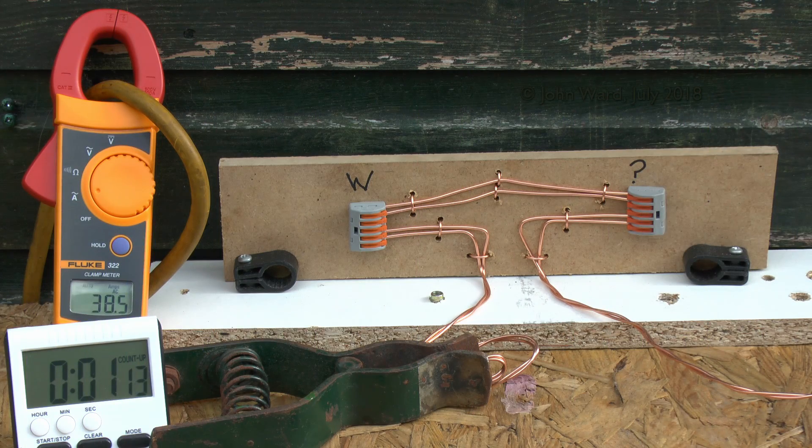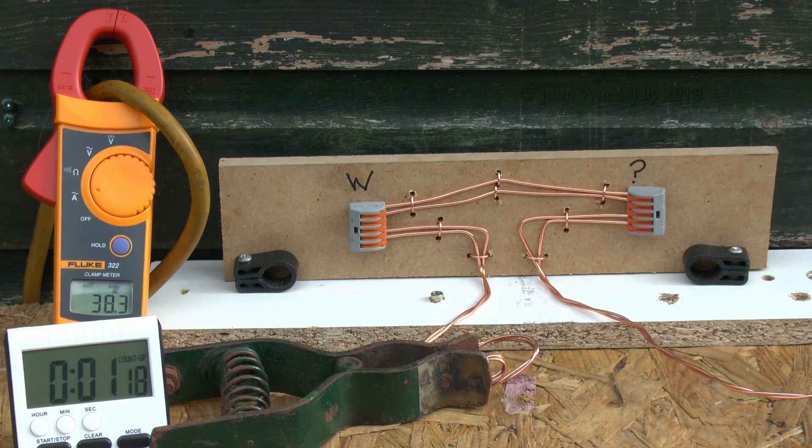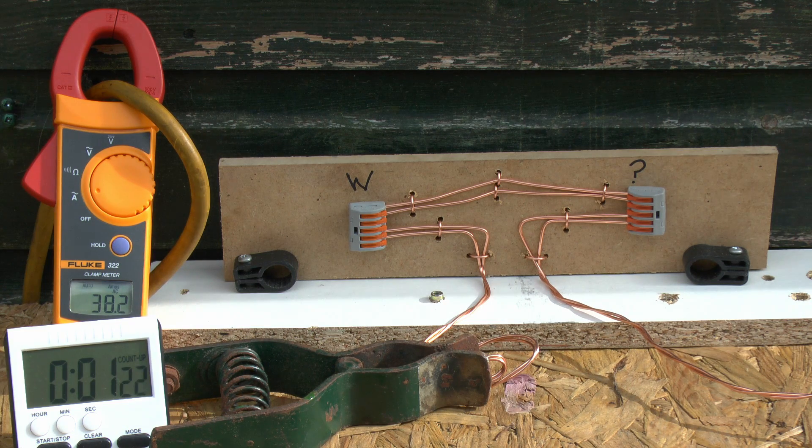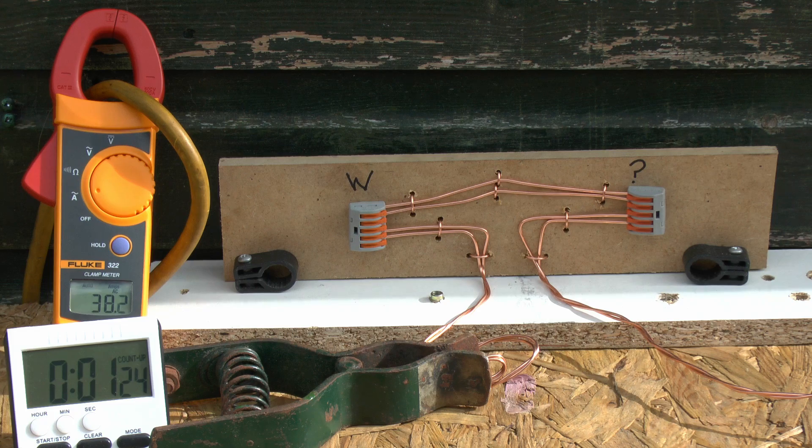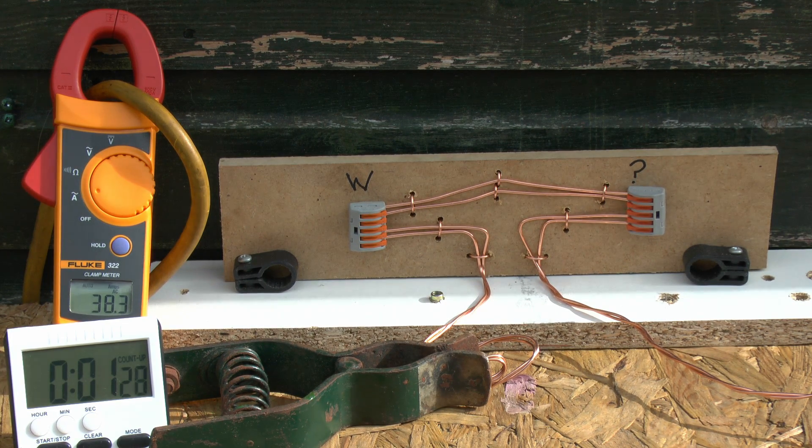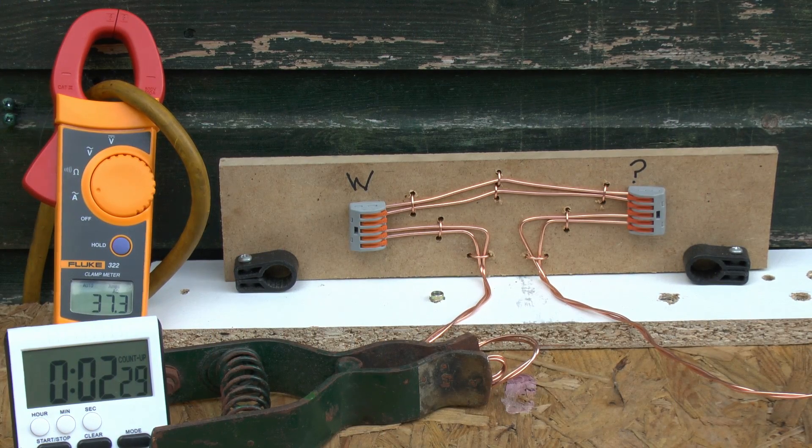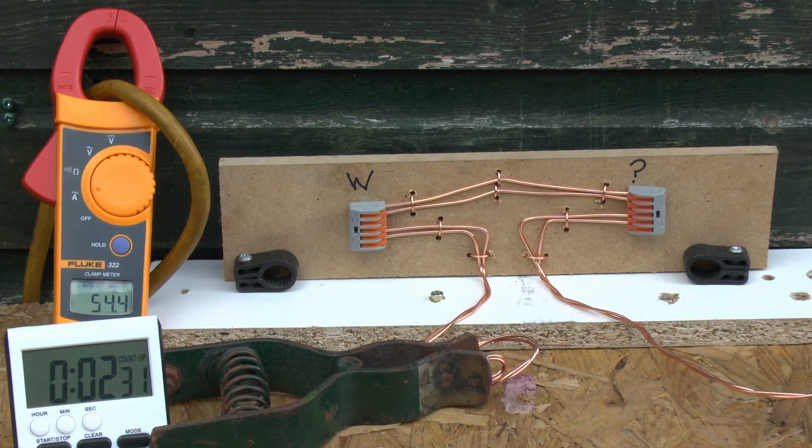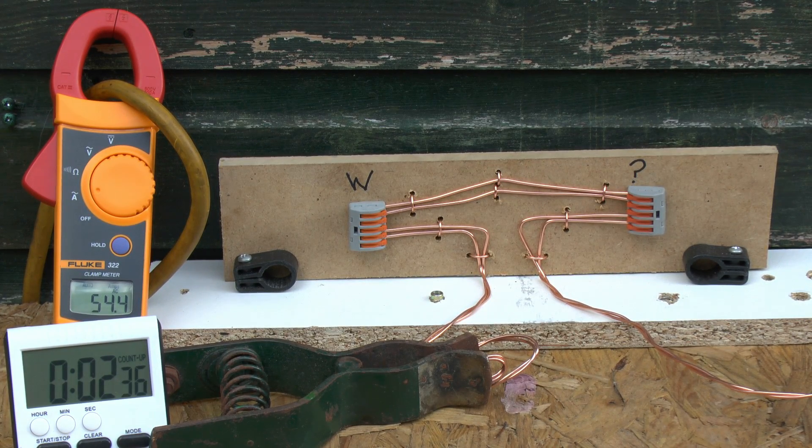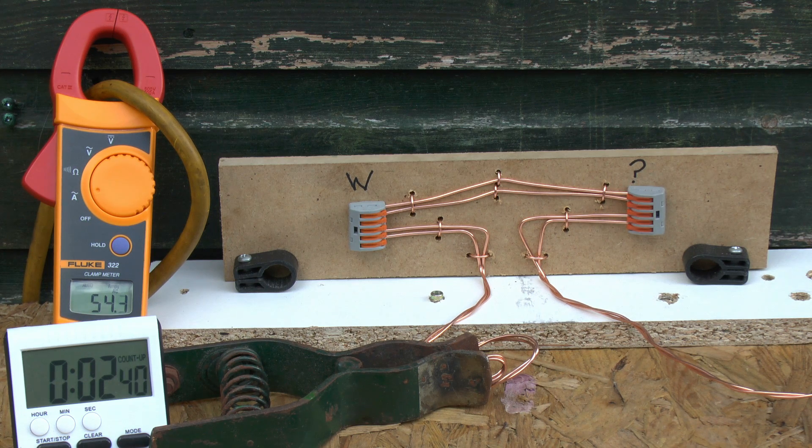So now I've cranked up the current to the next level, which is about 38 amps in this case, and that represents quite a significant overload for these connectors, so we'll leave it running a bit and see if anything happens. So about two and a half minutes in now, and nothing's happening there, so turning up the current even more, so now we're running at around 55 or so amps, or just slightly lower. And again we'll just leave this running and see what if anything actually happens.